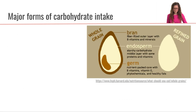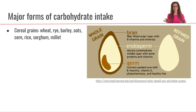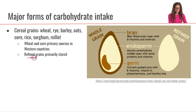Now, what are some of the major forms of carbohydrates in the diet? A lot comes from cereal grains — wheat, rye, barley, oats, corn, rice, sorghum, and millet. The various proportions can be different in different regions of the world, so wheat and corn are going to be the primary sources within those cereal grains in many western countries. Most of these grains are consumed as refined grains.